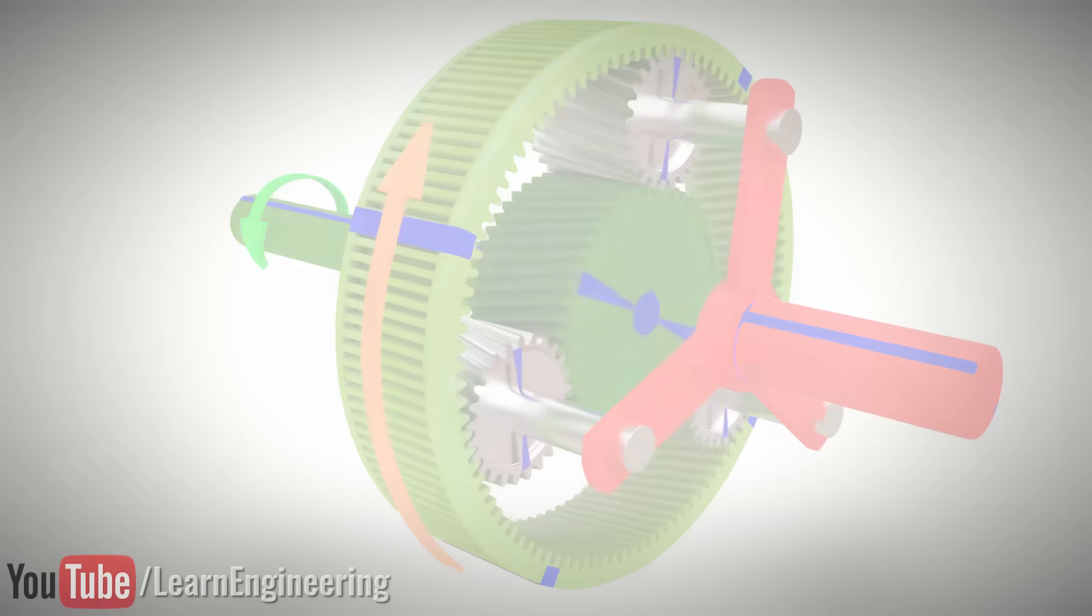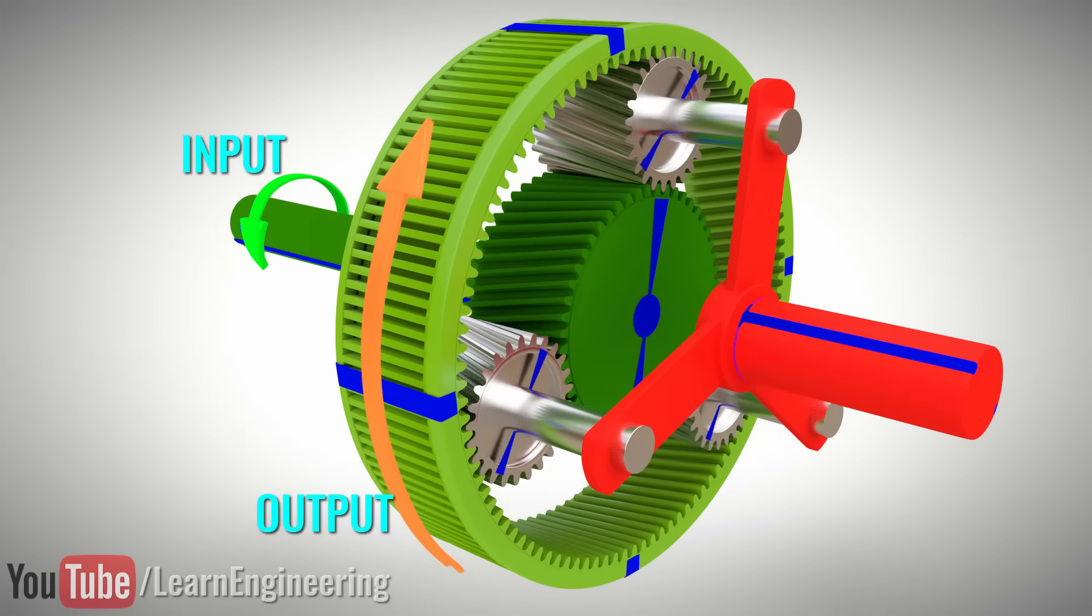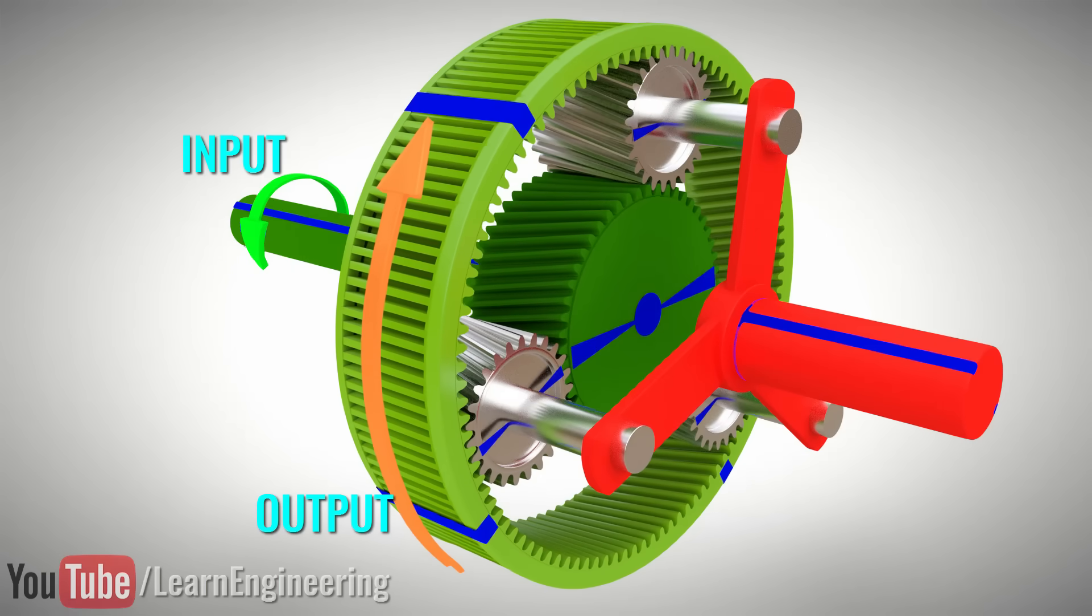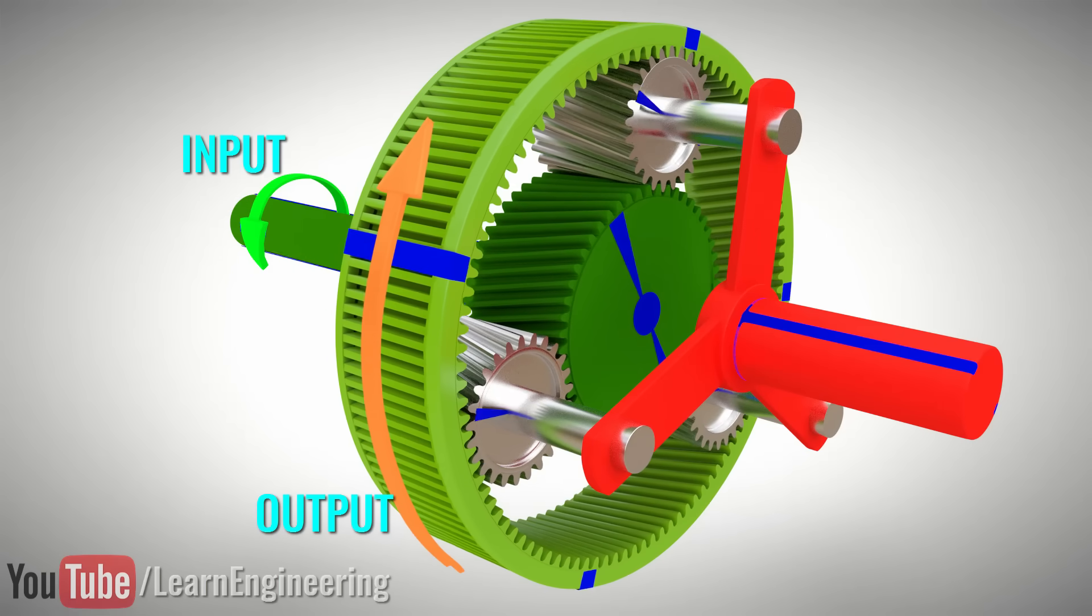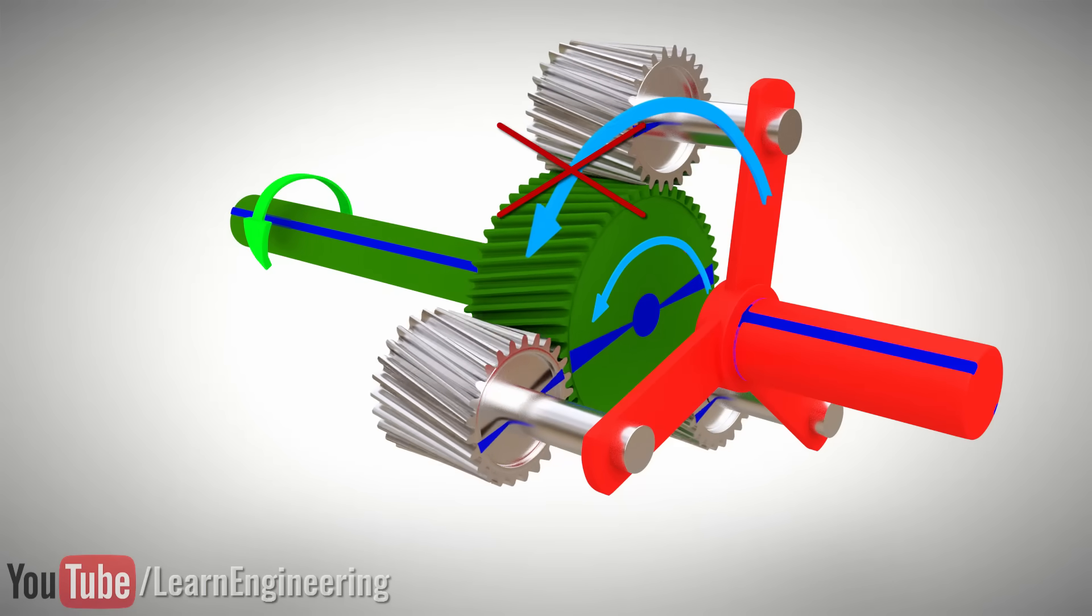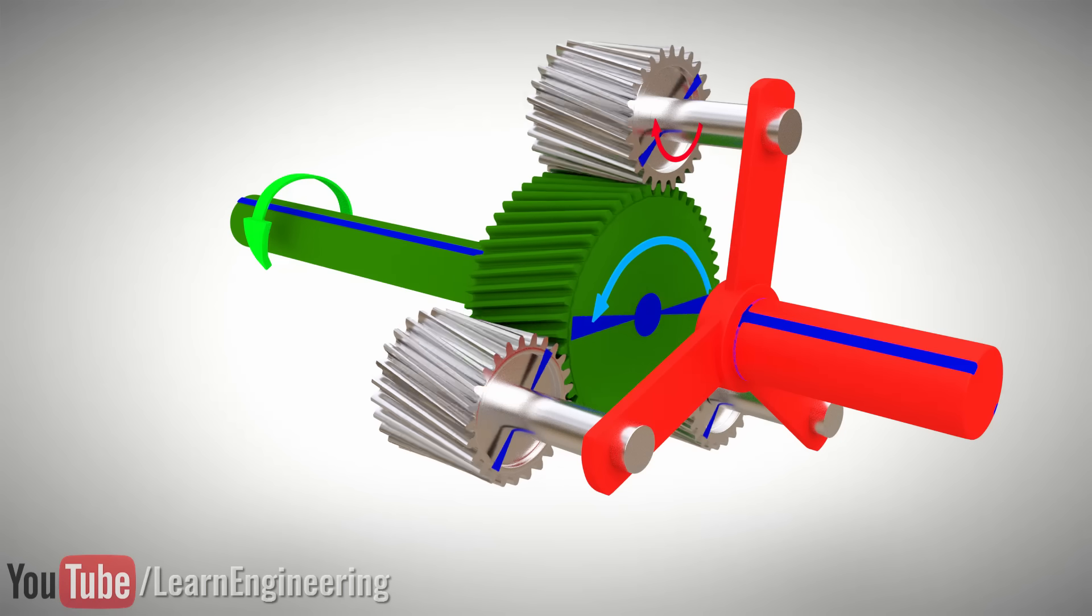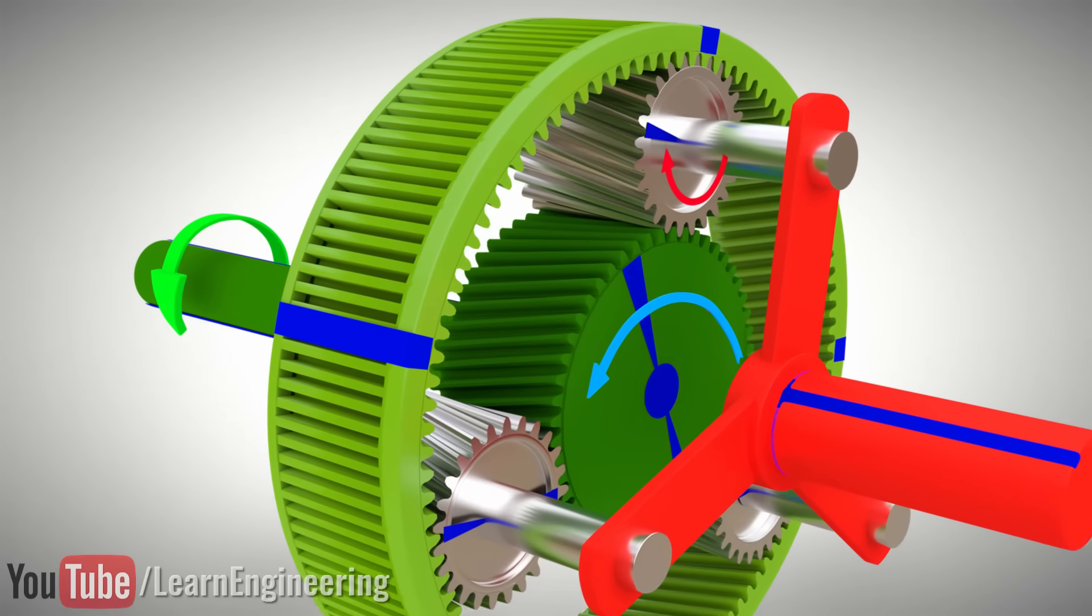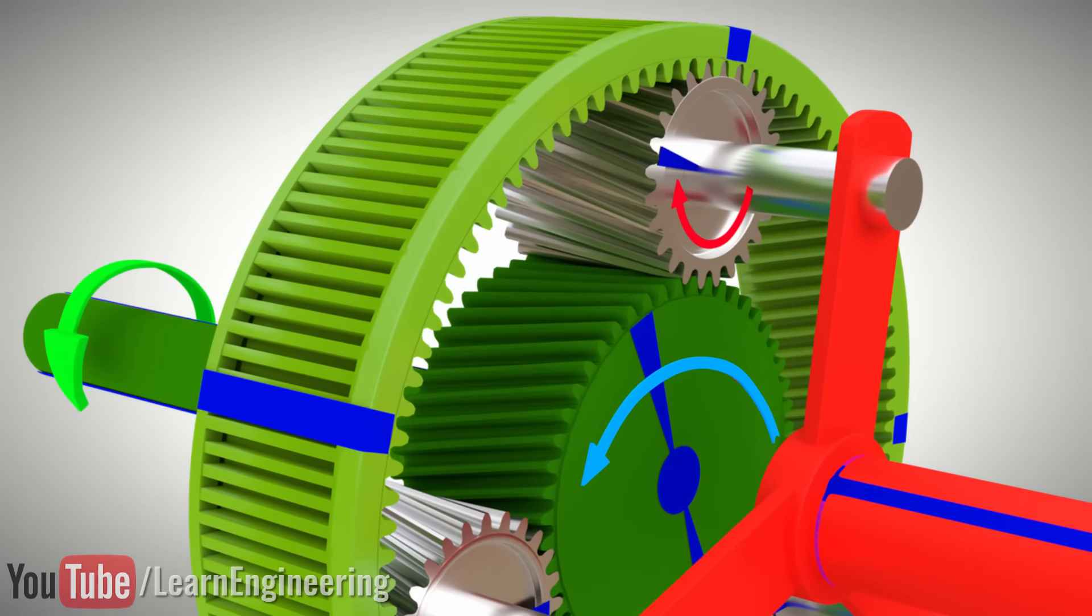Let's now explore this reverse mechanism of planet gears. For this, what you have to do is just arrest the motion of the carrier. This means that the planet gears are not allowed to turn and can only spin. This spin will be opposite to the rotation of the sun gear.